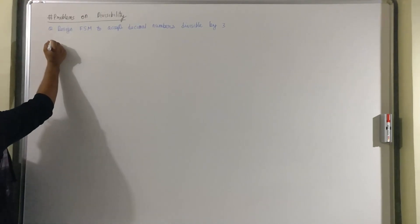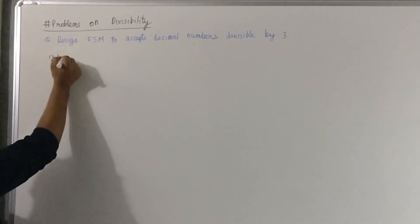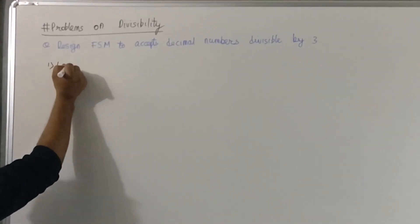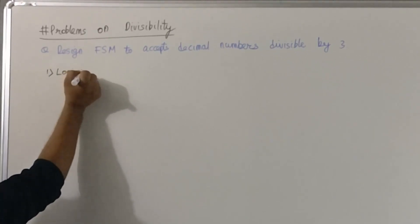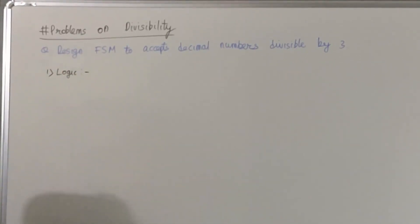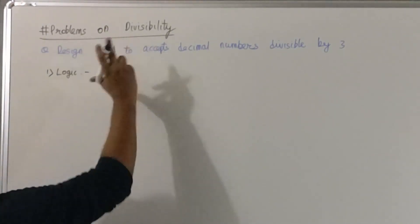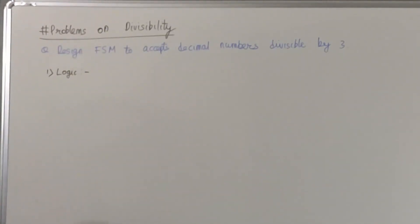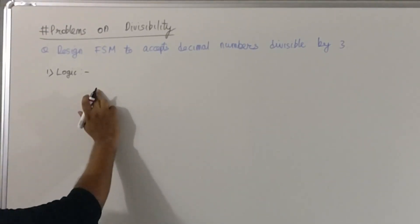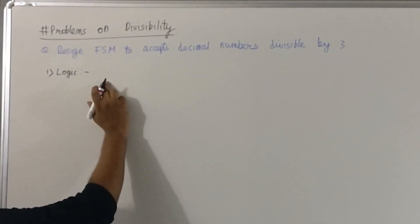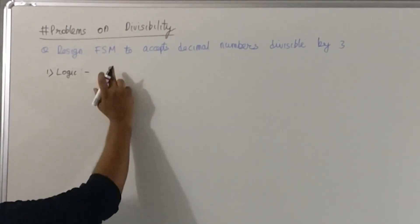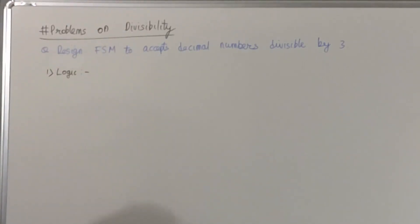So let's go with step number 1: logic. For every problem, I am going to follow 4 steps. The first step will be logic. Now the problem is on divisibility, so my logic for all divisibility problems is: the number of states in the automata will be equal to the number of remainders.